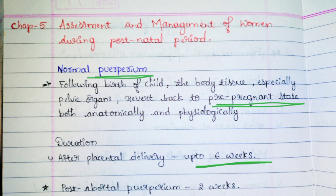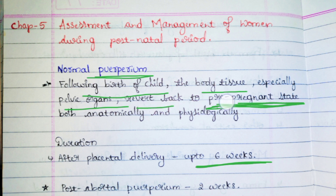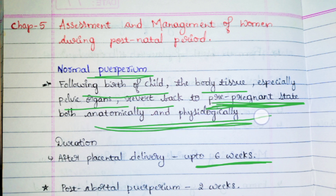After the delivery, the next six weeks the women's body will undergo the repairing process to come back to normal position. Normal puerperium is defined as: following the normal birth of the baby, the body tissue and pelvic organs — every organ — revert back to the normal pre-pregnancy stage, both anatomically and physiologically. That is normal puerperium.